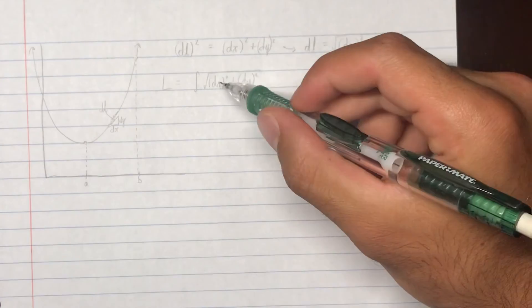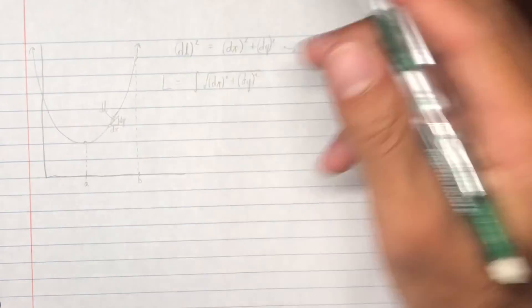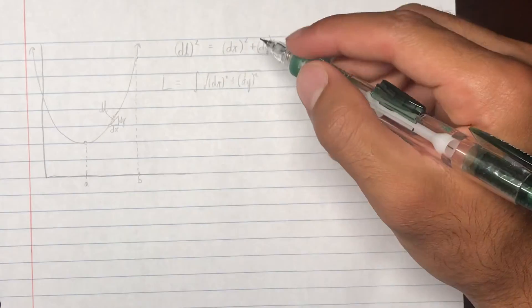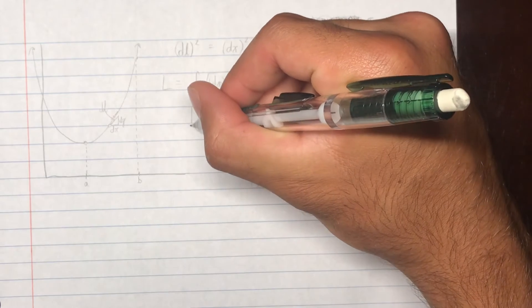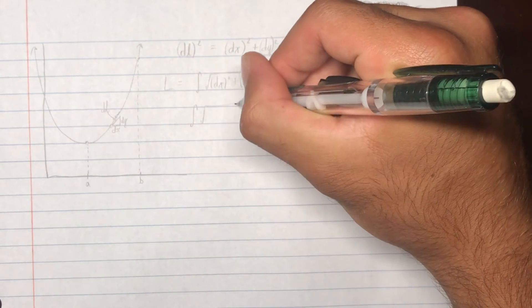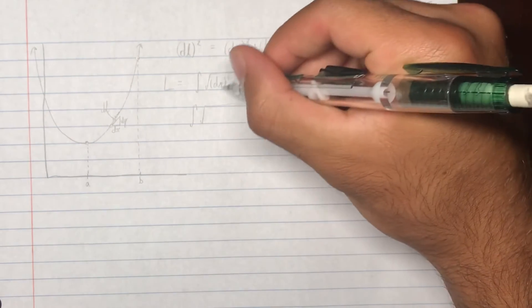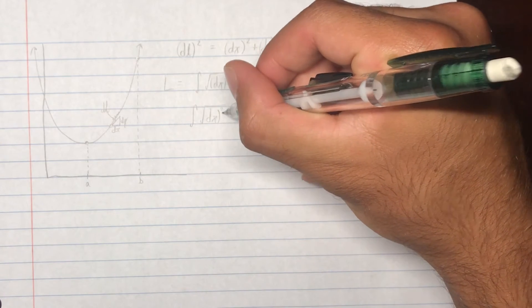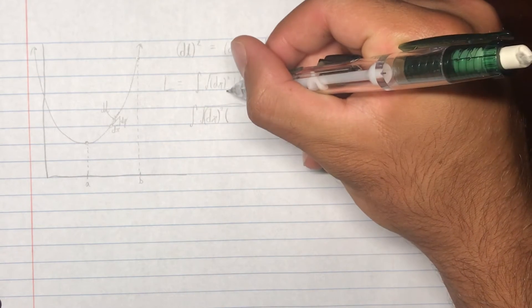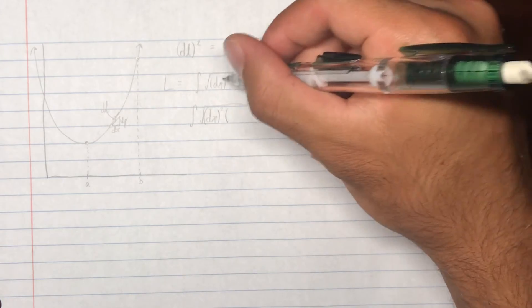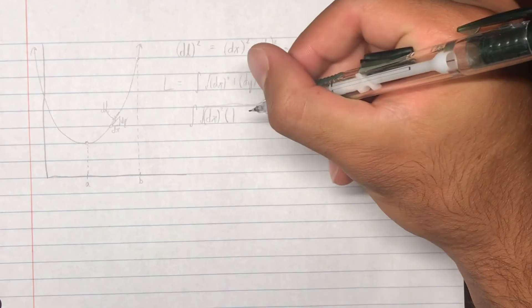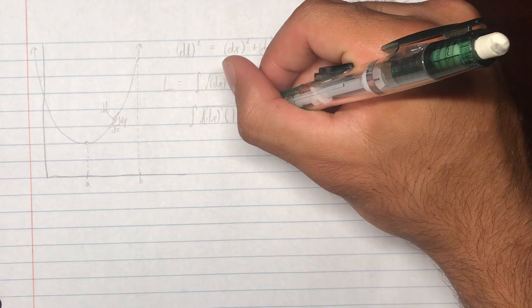So, what's going to happen is this becomes integral of the square root of, so you factor out the dx squared, right? So, the first term, you factor out dx squared out of dx squared, so it just becomes 1. And the second term, there actually isn't a dx squared. So, when you factor out something, it's just dividing.